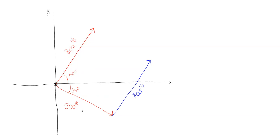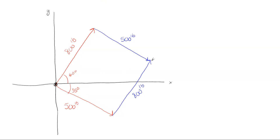Then you're going to repeat that process for the 500 — copy it and paste it at the end of the original 800. That forms a parallelogram: a four-sided shape made up of two sides of equal forces — 800, 800, 500, and 500. Your resultant force will go from corner to corner, from where the two original forces act to where the two copied forces collide. That line is going to be my resultant force.